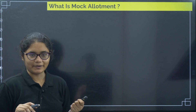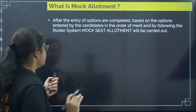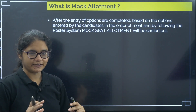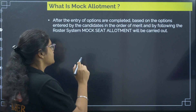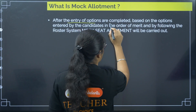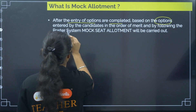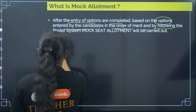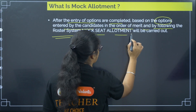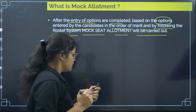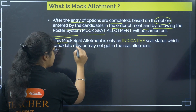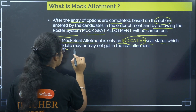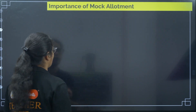So what is mock allotment? After the entry of options — like now you are in the round one option entry phase and you are putting your preferences — once the entry of options is completed, based on the options entered by the candidates in the order of merit and by following the roster system, mock seat allotment will be carried out.